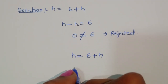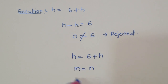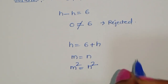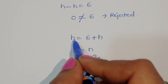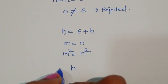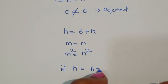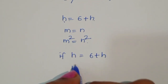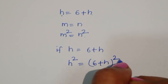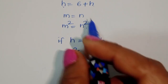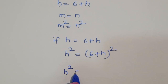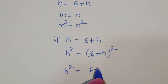The second method: h is equal to √(6 plus h). We know that if m equals n, then m squared is equal to n squared. Using this, if h is equal to √(6 plus h), we can say h squared is equal to (6 plus h) whole squared.